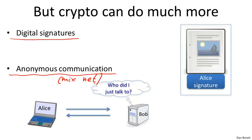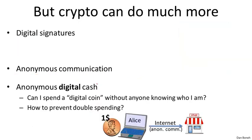One interesting thing about this anonymous communication channel is it's bidirectional. Even though Bob has no idea who he's talking to, he can still respond to Alice, and Alice will get those messages. Once we have anonymous communication, we can build other privacy mechanisms.